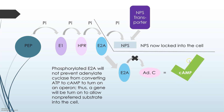In option two, there is not a lot of preferred substrate coming into the cell. The phosphate is passed along from PEP, but since no preferred substrate is being utilized, E2A stays phosphorylated. Because it is phosphorylated, it cannot bind to adenylate cyclase, so adenylate cyclase is uninhibited and converts ATP into cAMP. cAMP activates an operon, turning on genes so that non-preferred substrate transporters allow non-preferred substrates into the cell, and E2A phosphorylates them to lock them in.